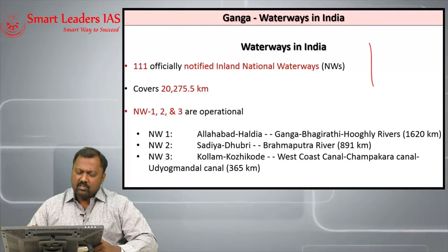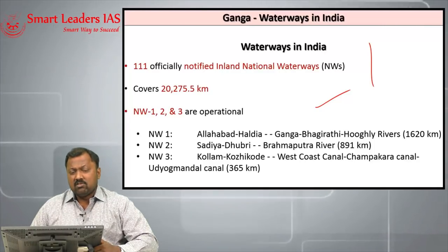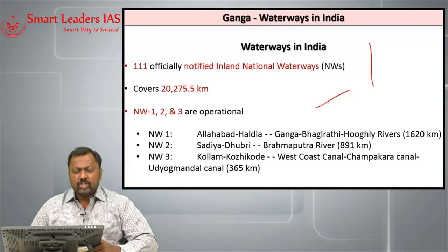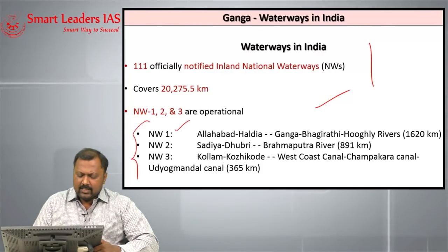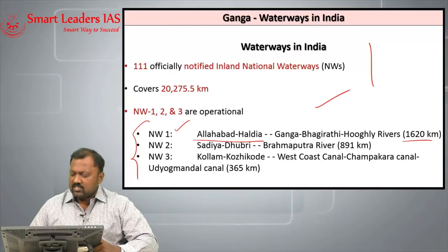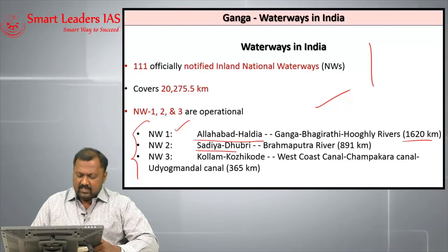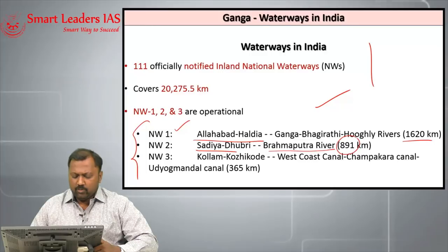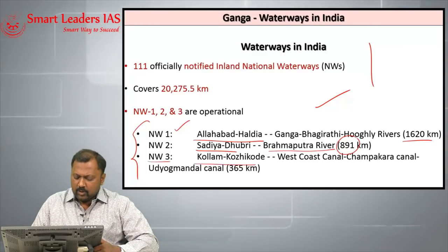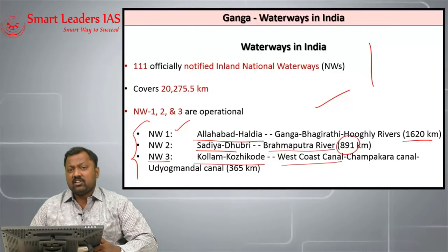There are 111 officially notified Inland National Waterways covering approximately 20,275 km, of which 3 are currently operational. National Waterway No. 1 connects Allahabad and Haldia, approximately 1620 km. National Waterway No. 2 connects Sadiya and Dhubri on the Brahmaputra river system, covering 891 km. National Waterway No. 3 runs from Kollam to Kozhikode as the west coast canal in Kerala.